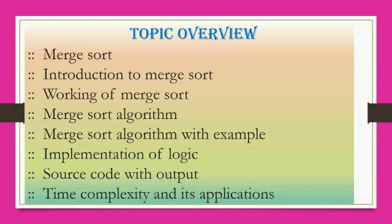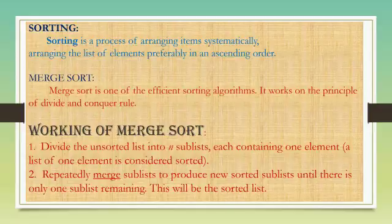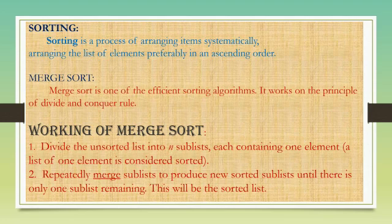First of all, what is meant by sorting? Sorting is a process of arranging items systematically — that is, arranging the given list of array elements preferably in ascending order. Now, what is merge sort and how does it work? It works on the principle of divide and conquer.